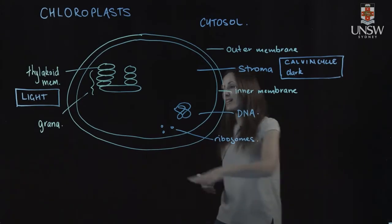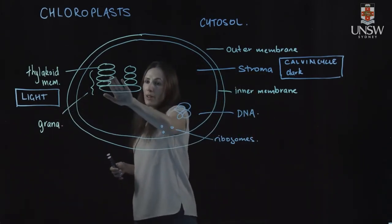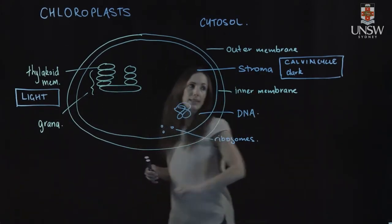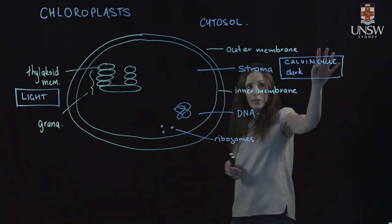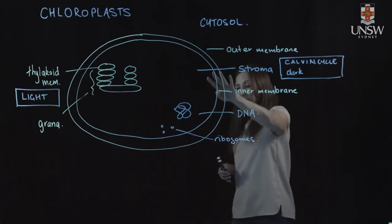And as a unit as a whole, they're carrying out photosynthesis with our light reactions occurring in the thylakoid membranes and then the dark reaction or the Calvin cycle occurring in the stroma.